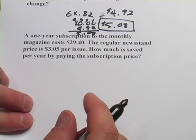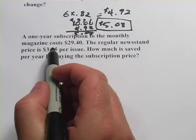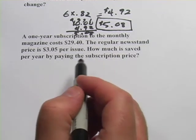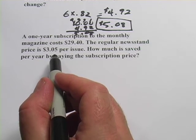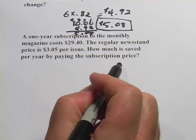All right, one more. This one says a one-year subscription to the monthly magazine costs $29.40. The regular newsstand price is $3.05 per issue. How much is saved per year by paying the subscription price?